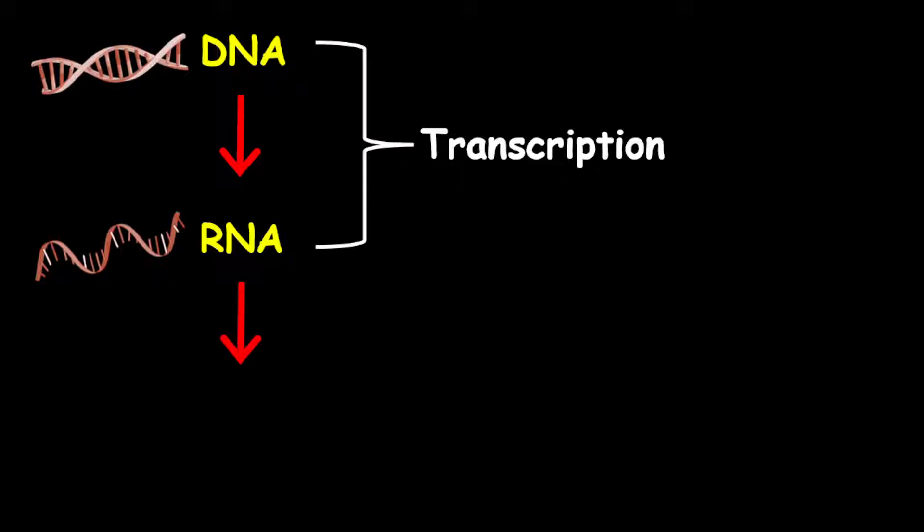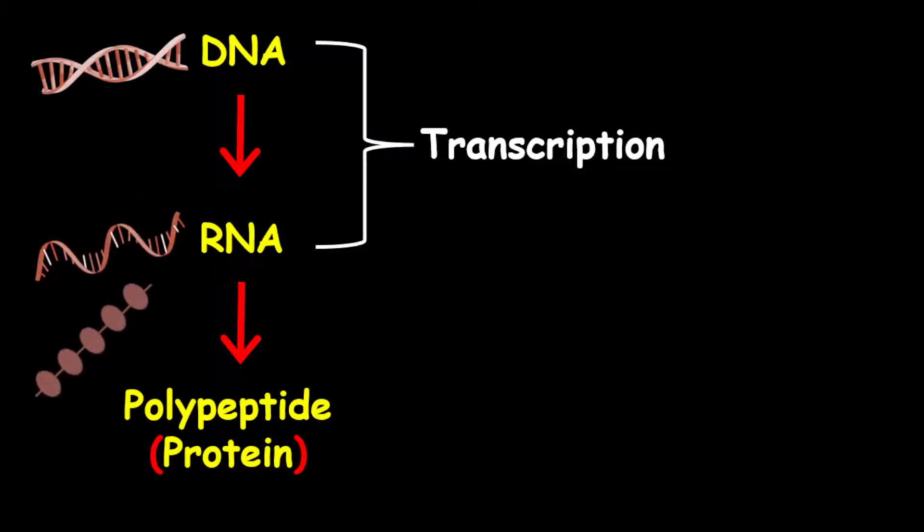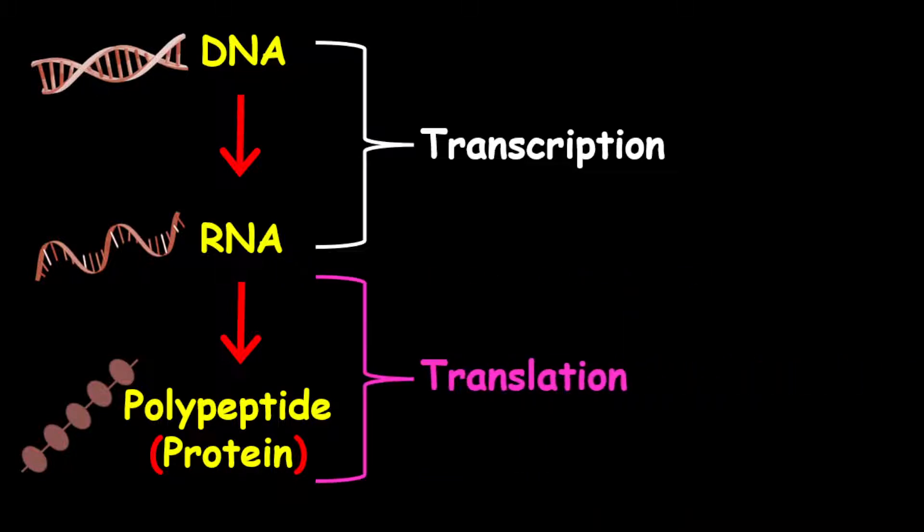RNA then turns into polypeptide, which will eventually fold into a functional protein. The process by which RNA turns into polypeptide is called translation. And this is where the code for the protein formation is actually being read.